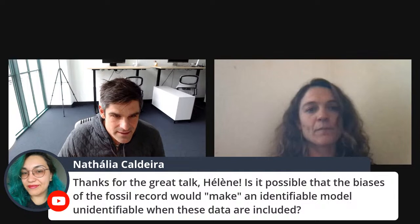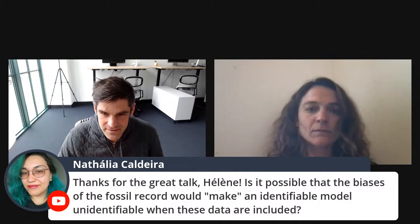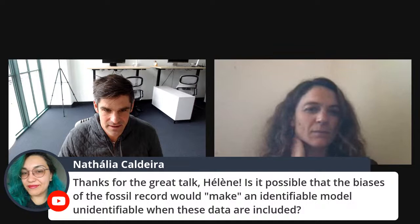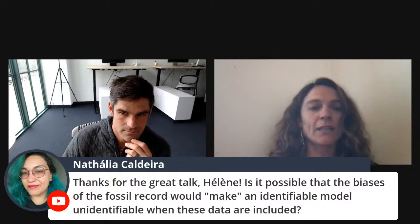Natalia Celeste asks: is it possible that the biases of the fossil record would make an identifiable model unidentifiable when these data are included? I think they might introduce other biases, but I don't see how adding data would decrease identifiability. If it doesn't introduce model misspecification or something else, it could easily increase both practical and asymptotic identifiability.